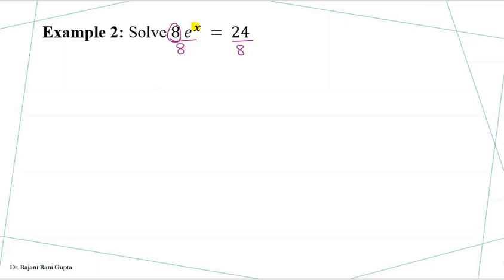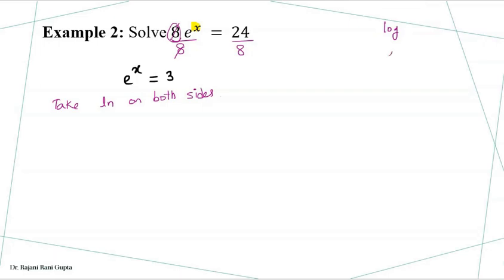When we do this, the 8 cancels and we are left with e to the power x equals 24 divided by 8, which gives us 3. Now, since the base is e, we take log to the base e — that is, ln — on both sides. If the base were 10 or any other number, we would use log; but if it is e, the exponential function, we use ln, which is log to the base e.